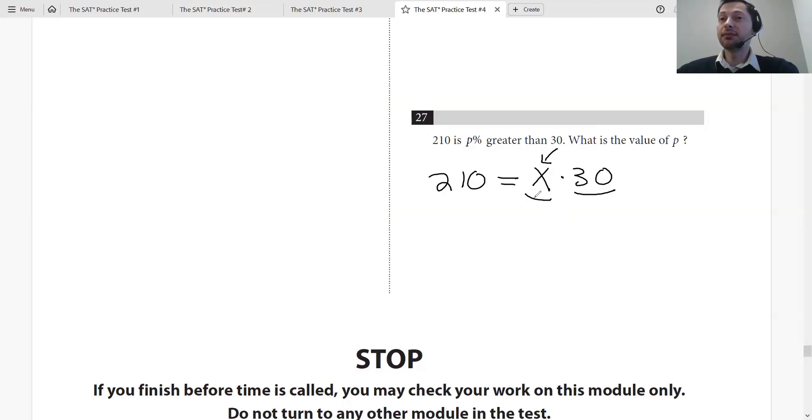You're increasing 30 by a certain percentage to get 210. So 210 is x times 30. What's x? Divide by 30. You get x equals 7.